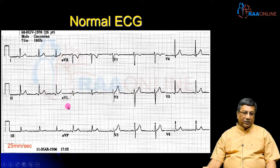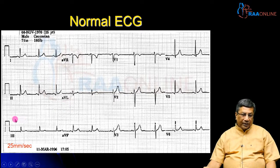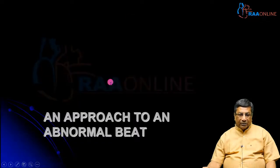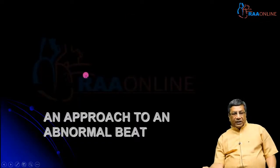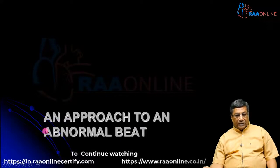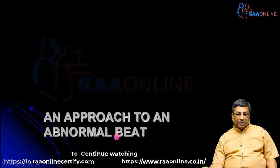Finally, calculate the heart rate to confirm it is between 60 to 100 per minute. Those are the six criteria to diagnose normal sinus rhythm, assuming the ECG is recorded at normal standardization and normal speed. Any rhythm that does not satisfy even one of these criteria is an arrhythmia. The first common thing you encounter in arrhythmia is an abnormal beat — where a regular sinus beat is followed by a beat with a different configuration — and how to approach that abnormal beat is what we will examine first.